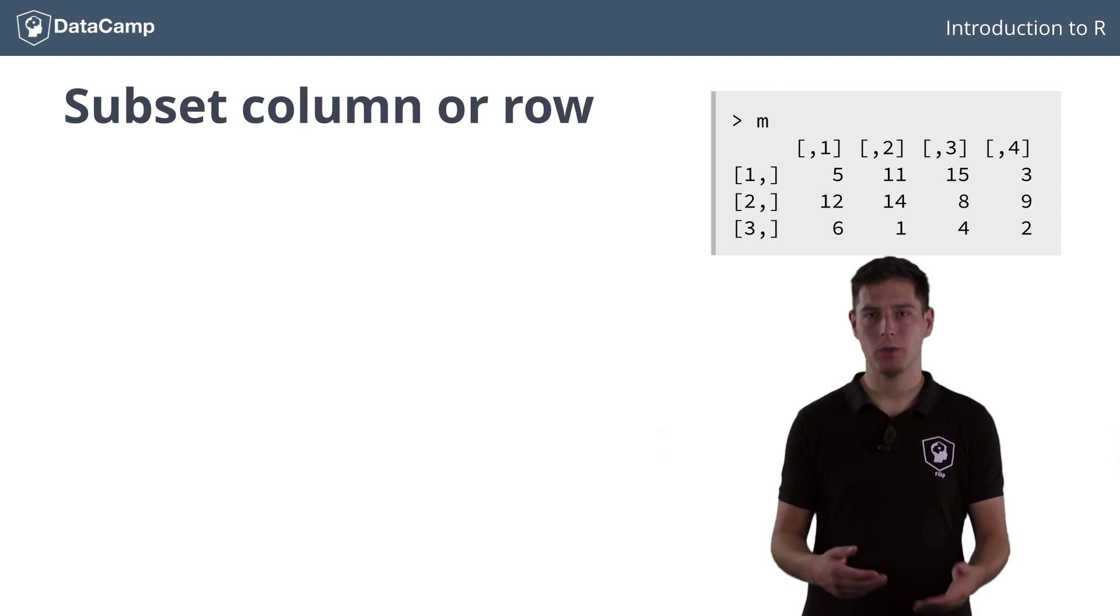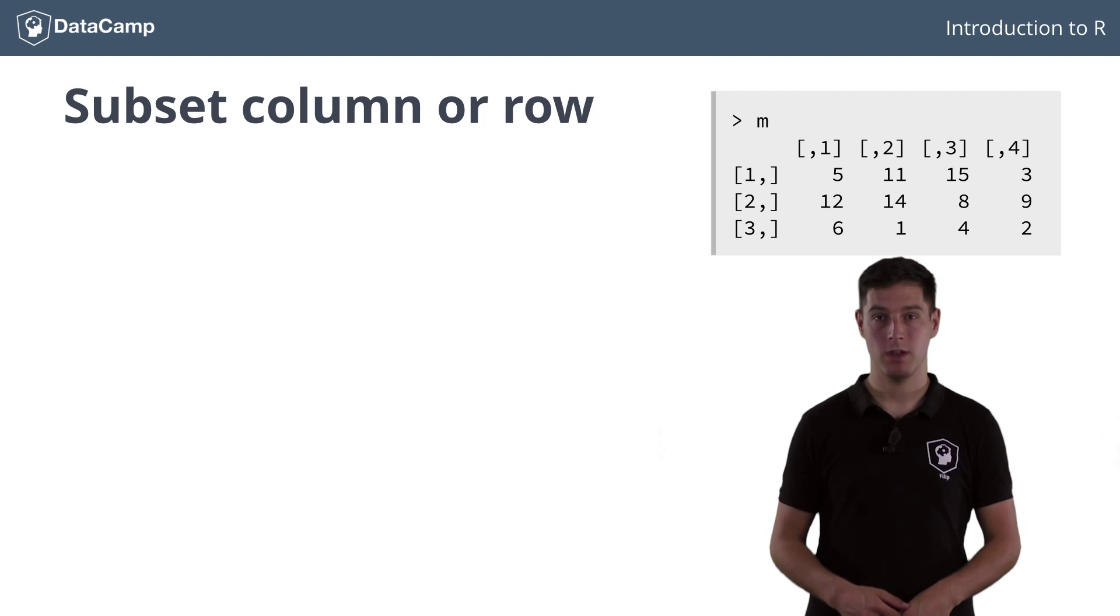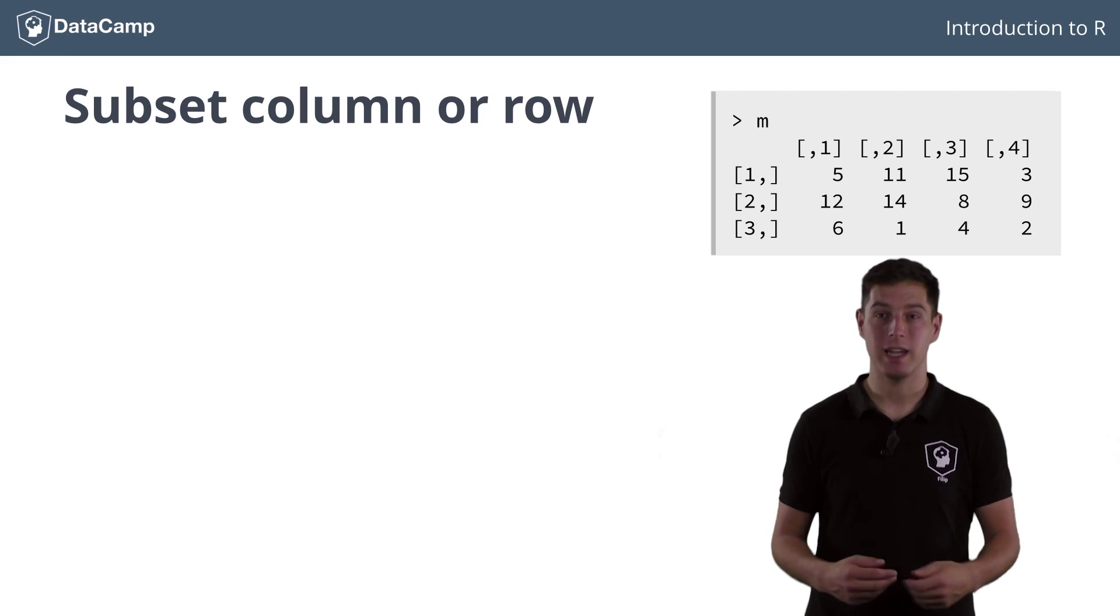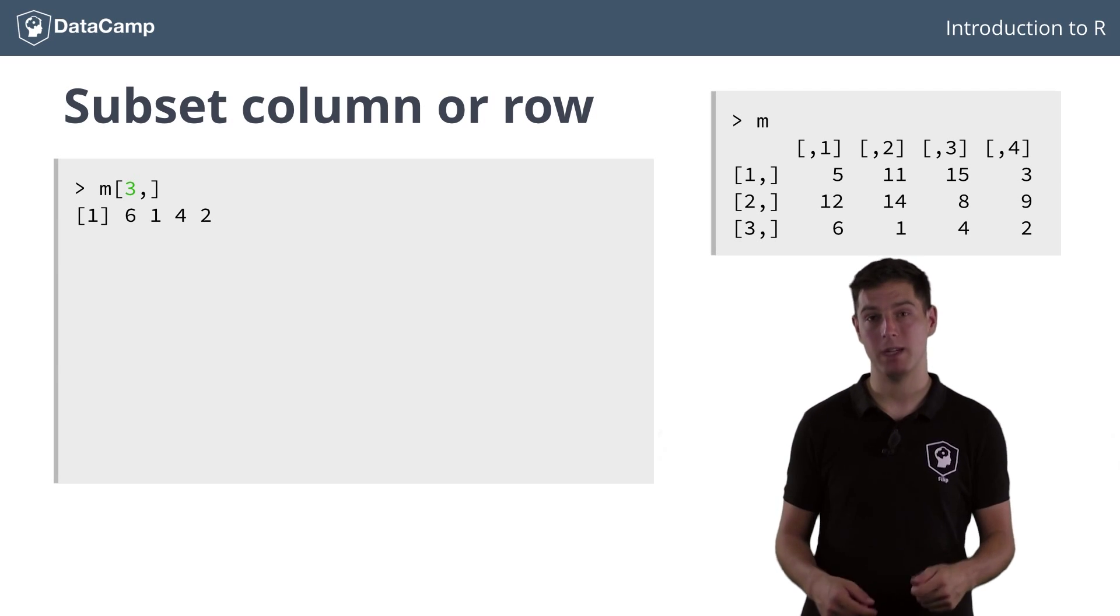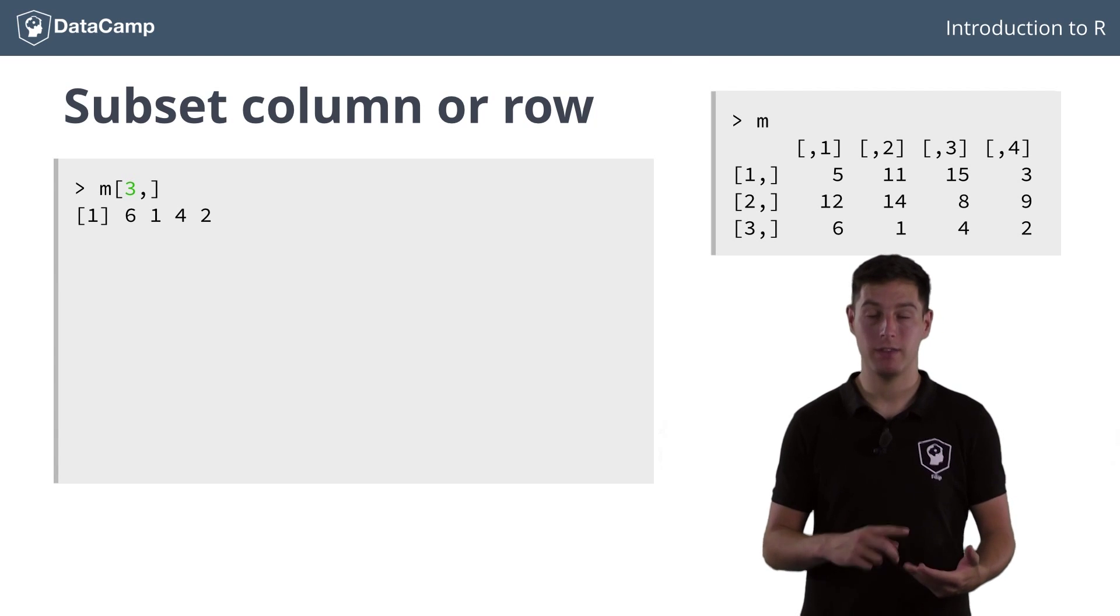Now what if you want to select an entire row or an entire column from this matrix? You can do this by leaving out some of the indices between square brackets. Instead of writing to select the element at row 3 and column 2, we can leave out the 2 and keep the 3 comma part. Now you select all elements that are in row 3, namely 6, 1, 4 and 2.